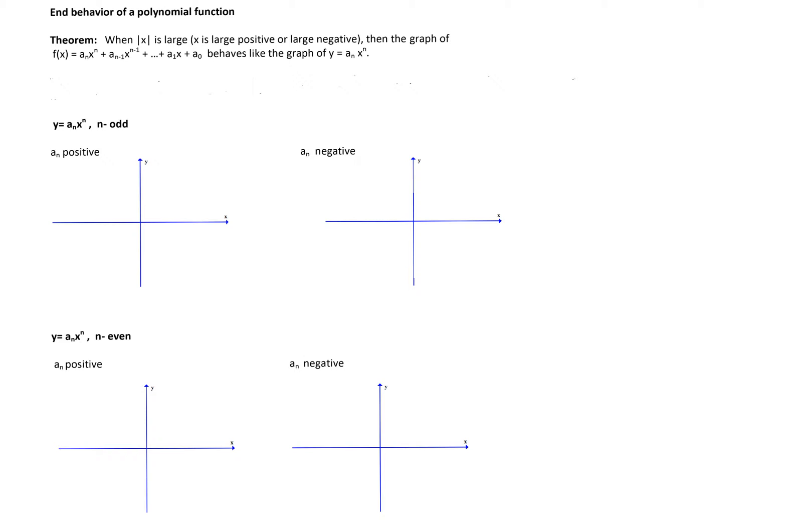As it happens, the polynomial function behaves at the left and right end as its leading term a_n times x to the power n, and therefore the graph of that function will behave at the left end and right end in the same way as the graph of a_n x to the n.